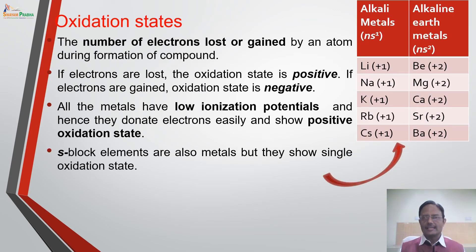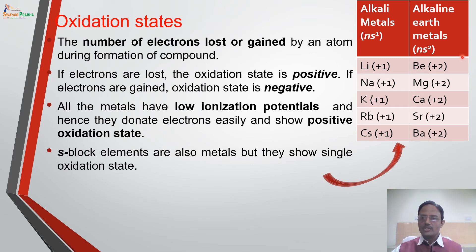Consider the example of S block elements — alkali metals and alkaline earth metals. Lithium, sodium, potassium, rubidium, cesium show only a +1 oxidation state. Alkaline earth metals — beryllium, magnesium, calcium, strontium, barium — show only +2 oxidation state. It means that S block elements show positive oxidation states, but no variable oxidation state — only a single oxidation state.